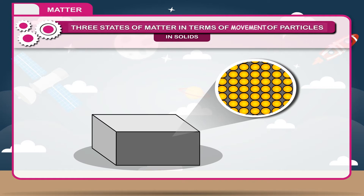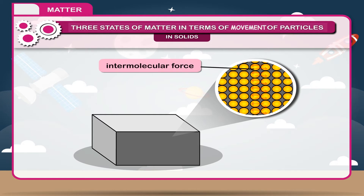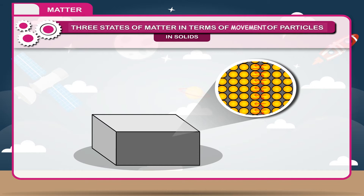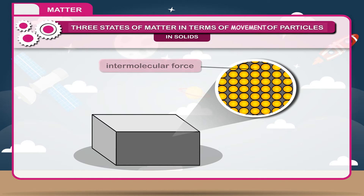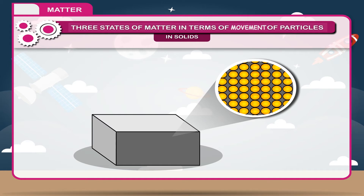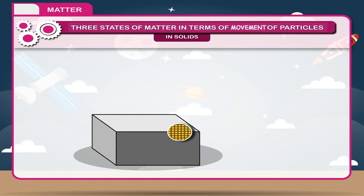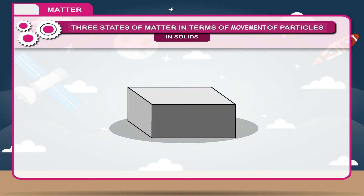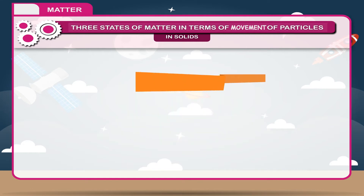The molecules have fixed position due to intermolecular force. As a result, they have definite shape and volume. Due to strong attractive intermolecular force between the molecules, it is difficult to break the solids. Hence, solids are rigid and strong.